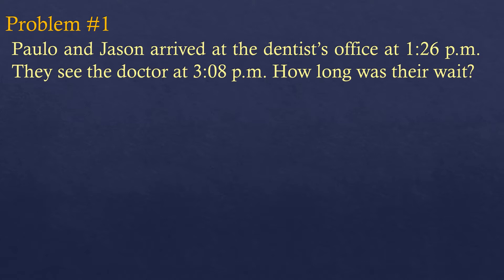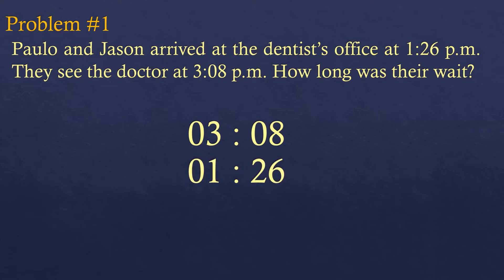Let us solve this. The time ended at 3:08 PM and it started at 1:26 in the afternoon. To find how long their wait was, we're going to subtract. Since 8 minutes is smaller than 26 minutes, we can't subtract, so we borrow 1 hour. We add 60 minutes because 1 hour equals 60 minutes, so the 3 becomes 2 and the 8 becomes 68.